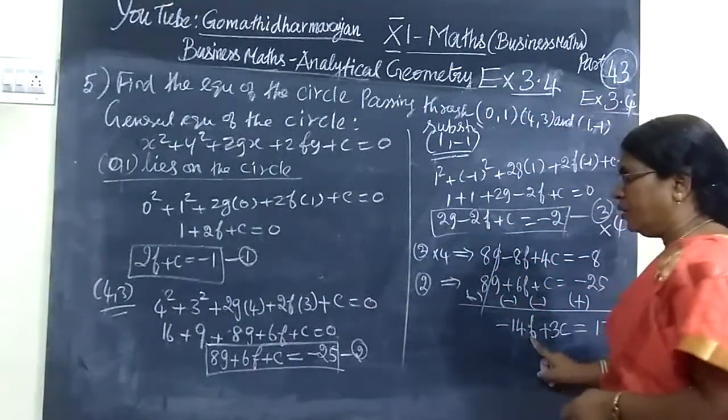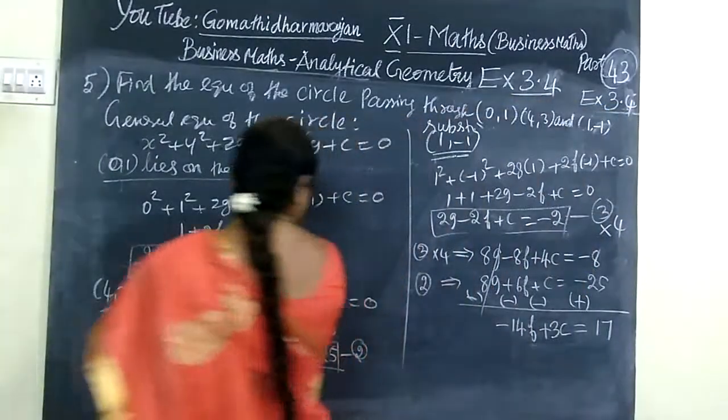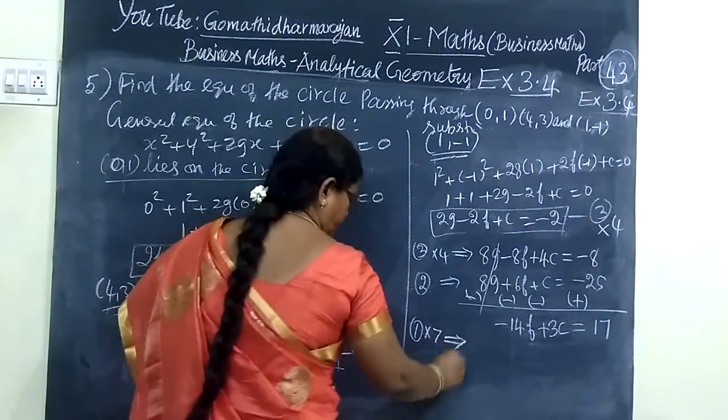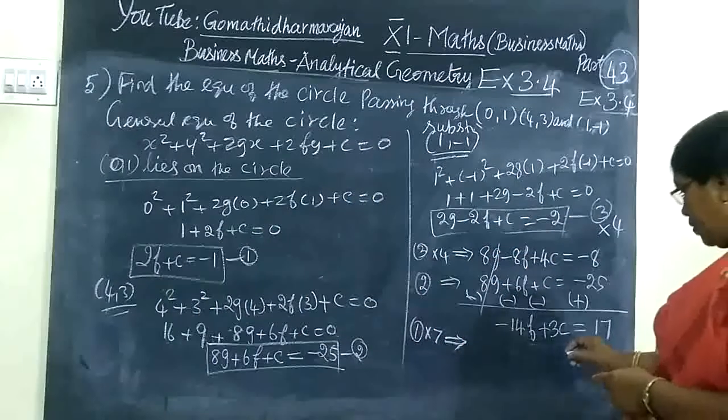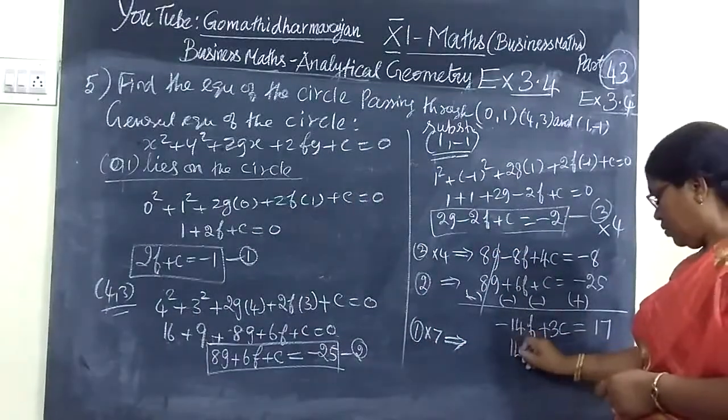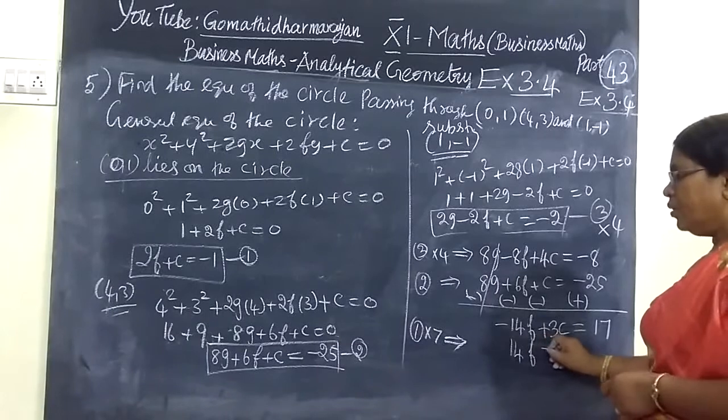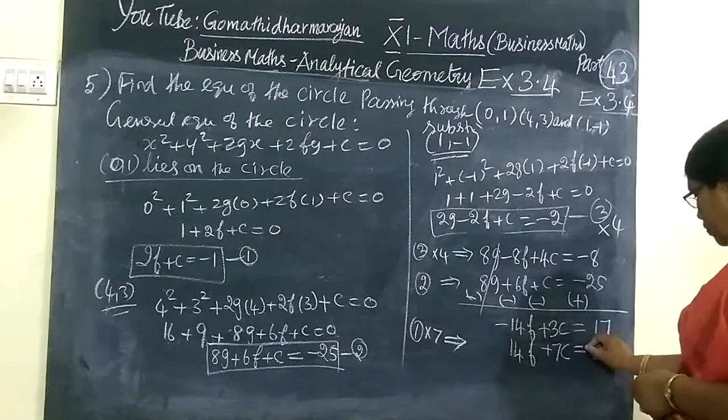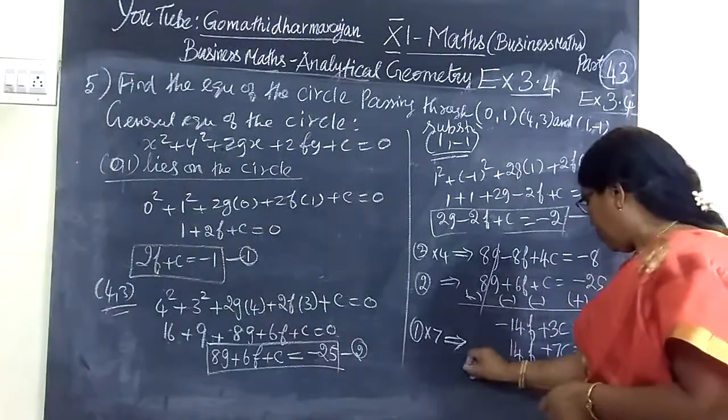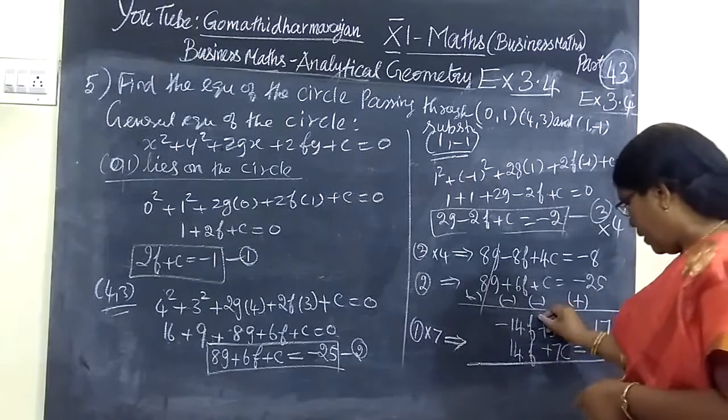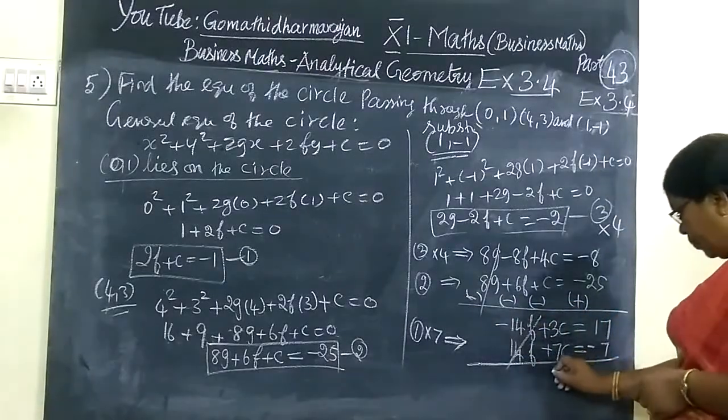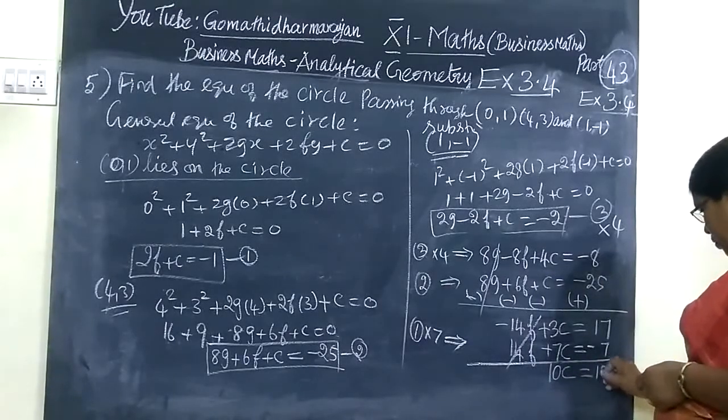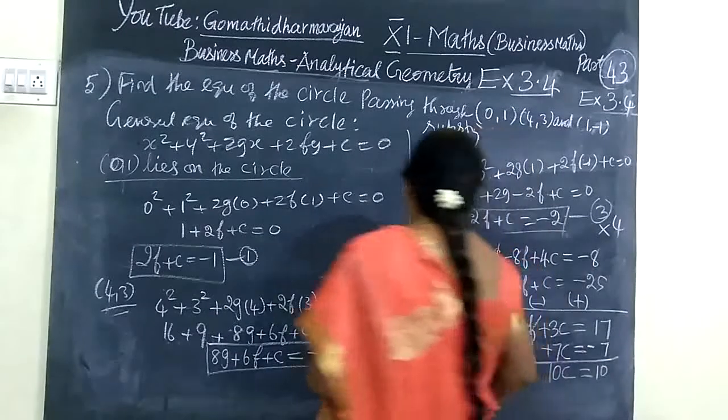Multiply this by 7. After multiplying by 7, equation 1 times 7 implies 14f plus 7c equal to minus 7.